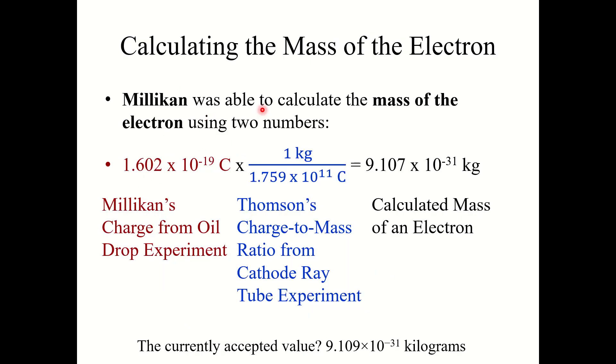Now using this charge and using Thompson's charge-mass ratio, he was able to calculate the mass of an electron. So he determined the mass of an electron to be 9.107 times 10 to the negative 31st kilograms. This was his calculated mass of an electron. Again, this experiment was performed almost 100 years ago. The currently accepted value is 9.109 times 10 to the negative 31st kilograms. So once again, a remarkably accurate calculation given the equipment that was being worked with at the time.